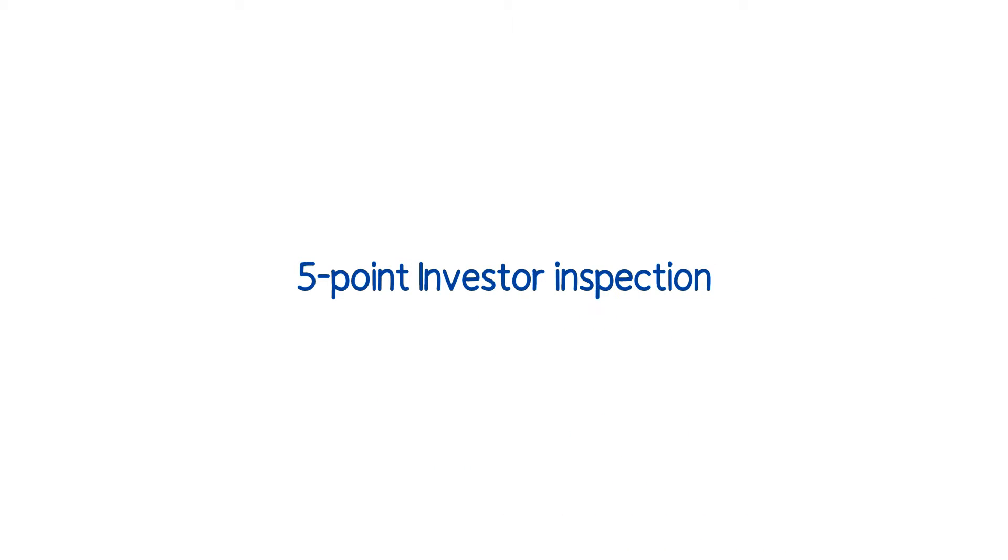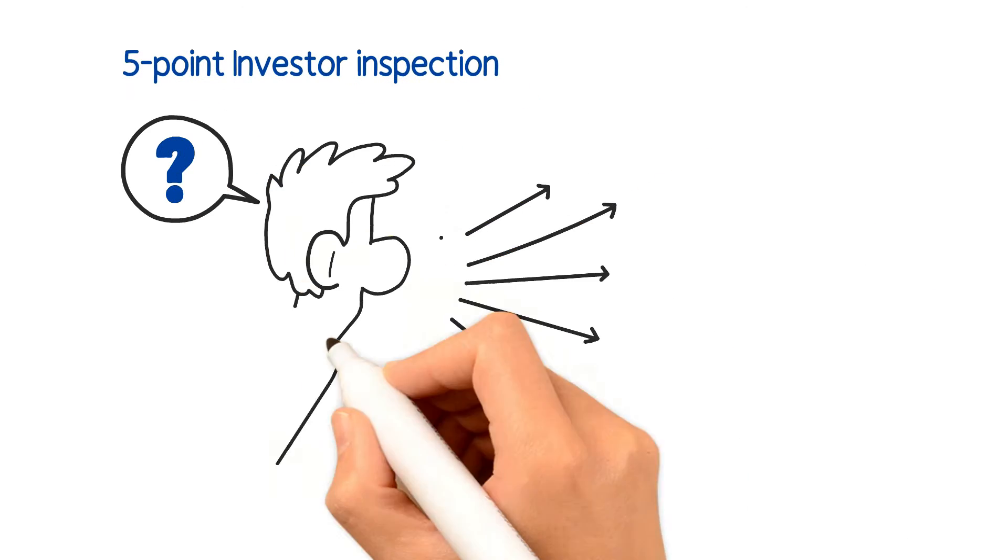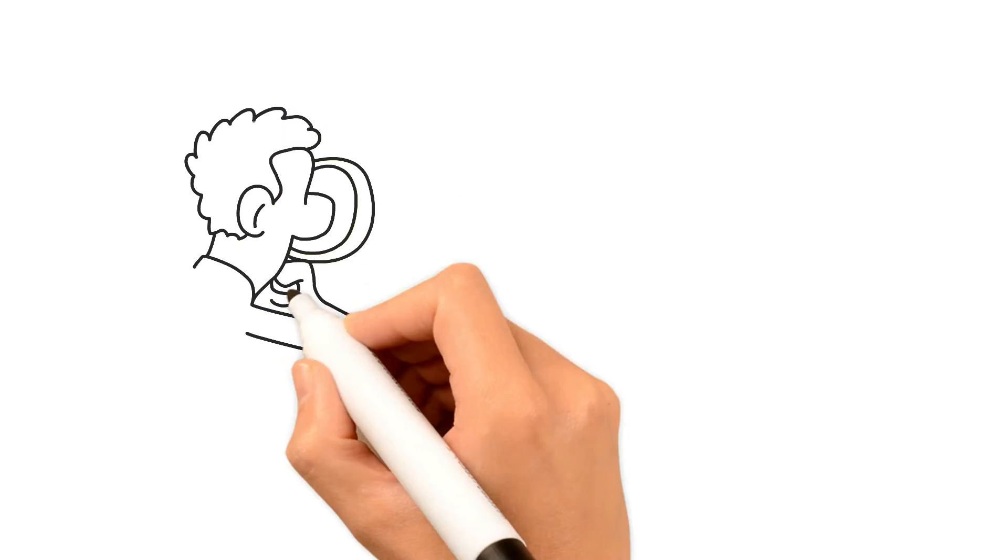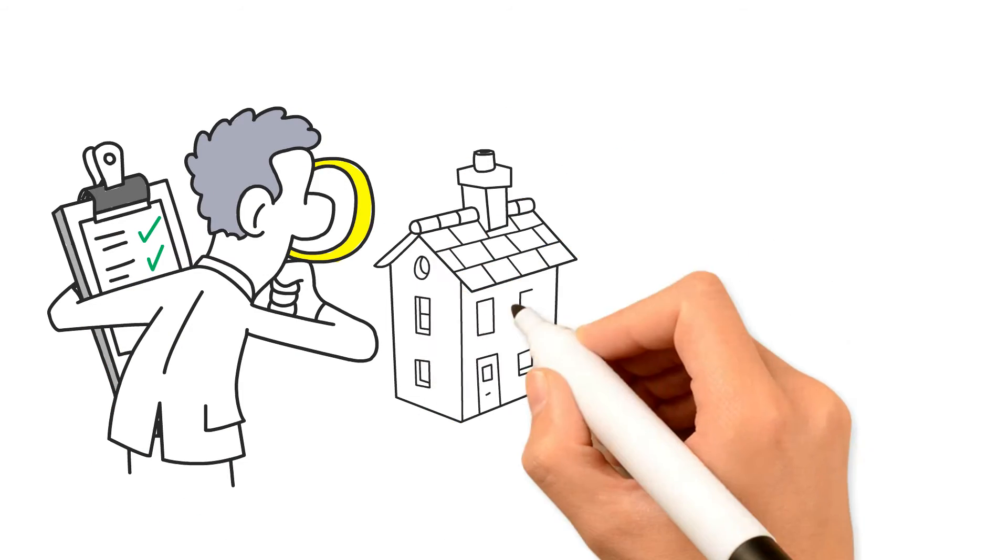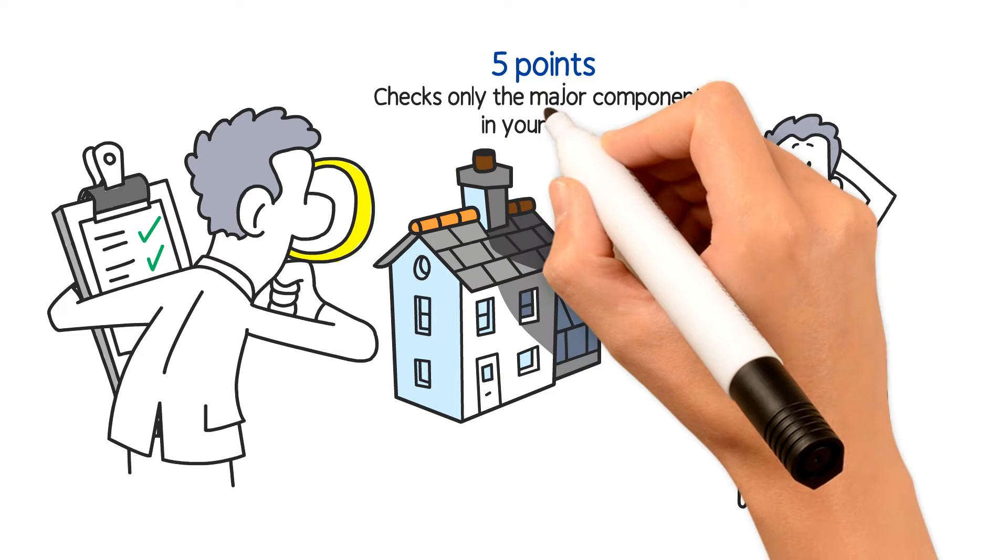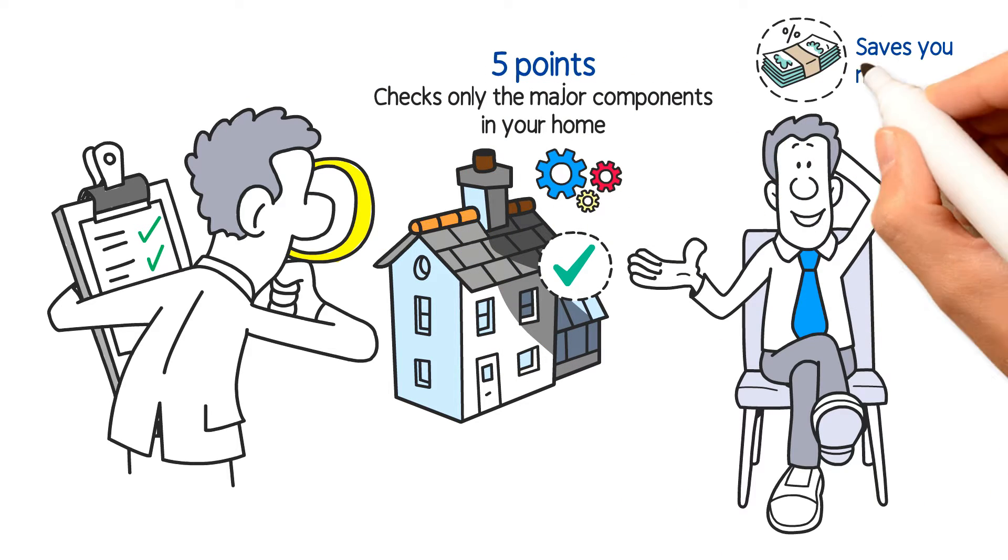Five-point investor inspection. What is a five-point investor inspection? Unlike a regular inspection where we check everything in the home, a five-point is a limited inspection that checks only the major components in your home, which is much quicker and saves you money.